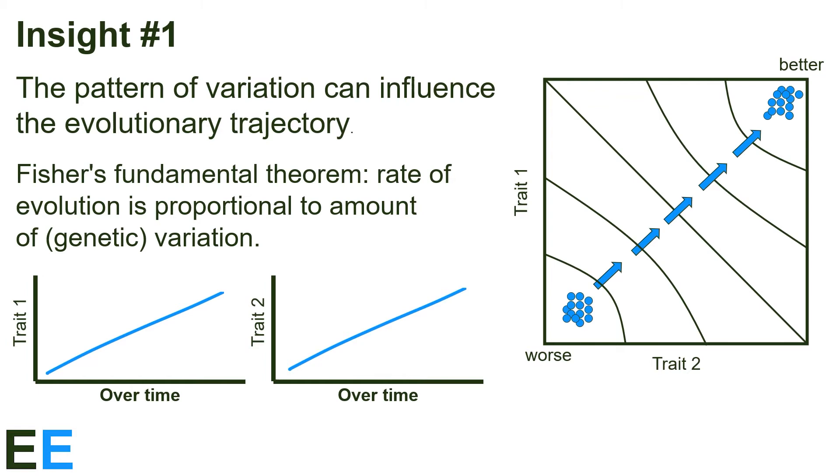We often can't see fitness landscapes directly, but if we see a population's average traits change like this, we can infer what the landscape looks like.